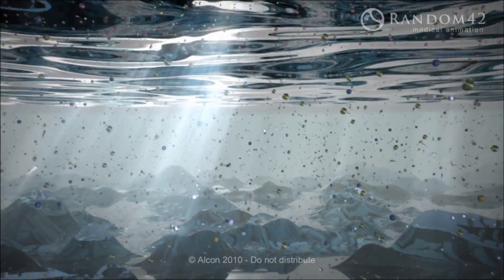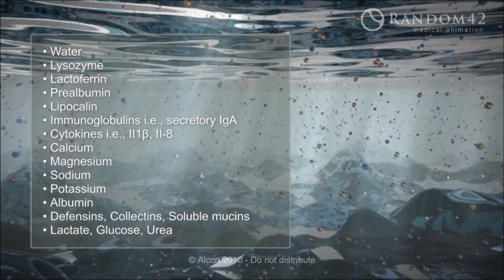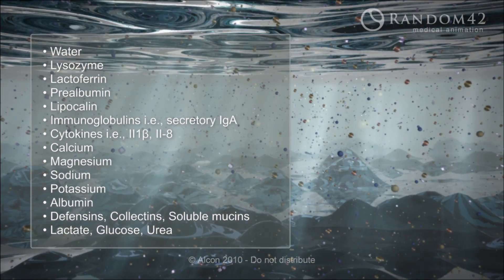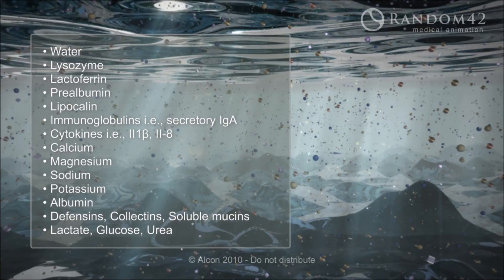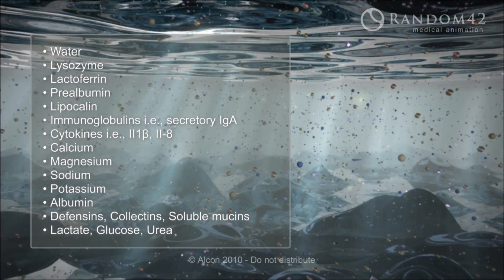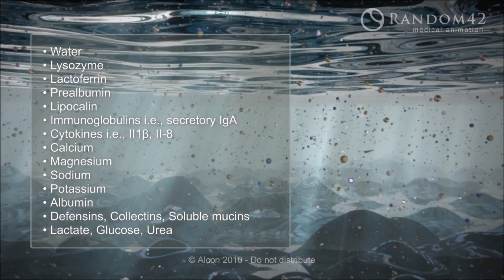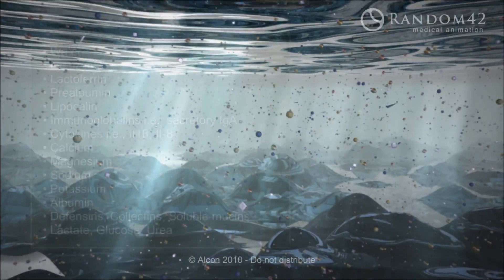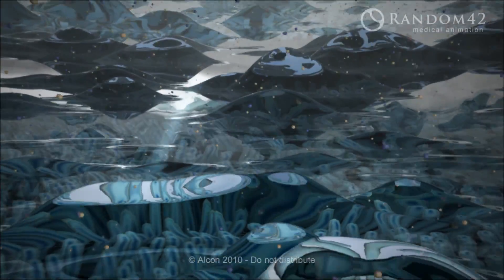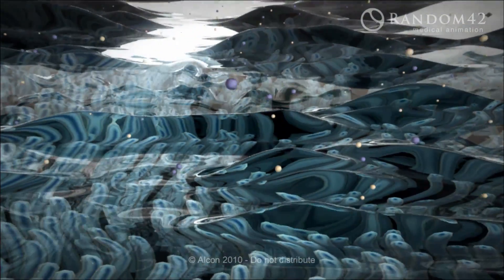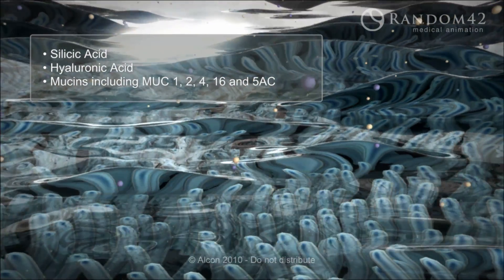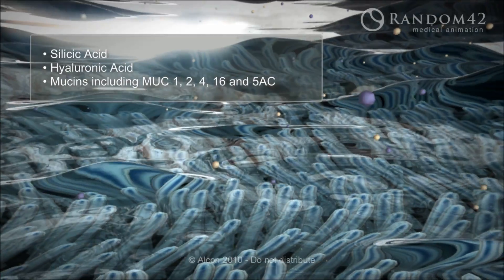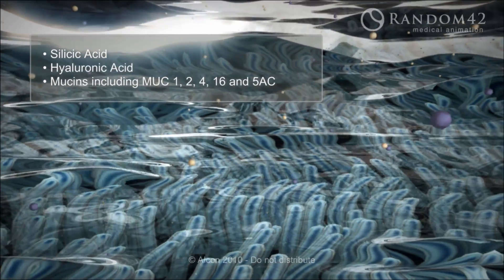The middle aqueous layer contains numerous essential nutrients supportive of the ocular surface environment. It is water-based and includes components such as lysozyme, immunoglobulins, sodium and some soluble mucins. The mucin layer components include silicic acid, hyaluronic acid and mucins such as MUC1, 2, 4, 16 and 5AC.